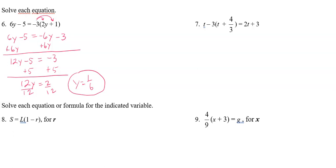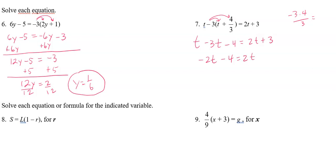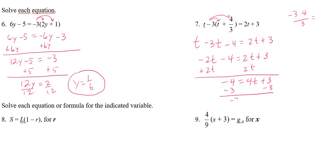Number seven — I also have to distribute, this time negative three to both terms. Bring down t: negative three times t is negative 3t, and negative three times four-thirds equals negative four. Combine like terms on the left: 1t − 3t = −2t. Add 2t to both sides, giving −4 = 4t + 3. Subtract three from both sides, then divide by four. The final answer is t = −7/4.